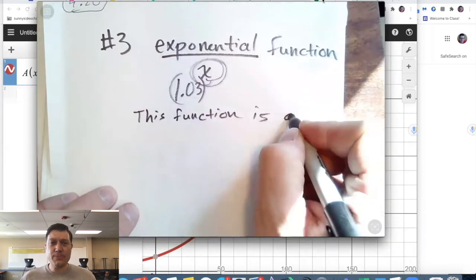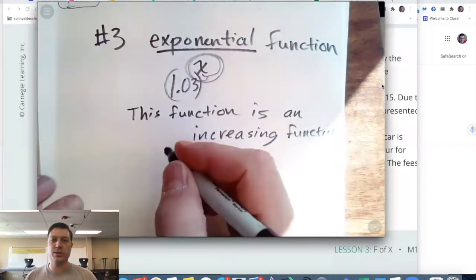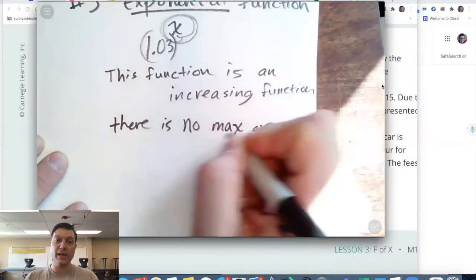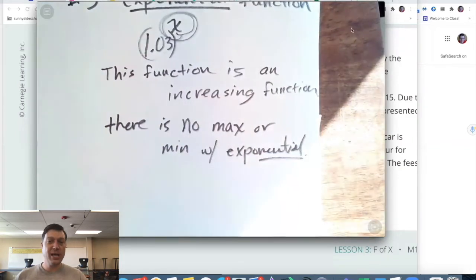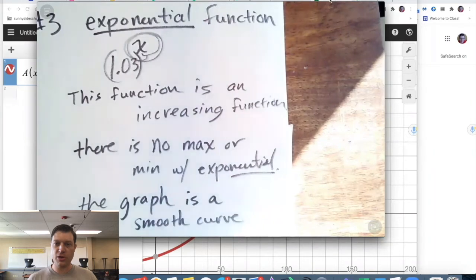This function is called an exponential. So maybe what you're going to do for this assignment is you're going to write your answers down. You have to define the function family, it's exponential. You have to say if it's an increasing or decreasing or a combination of increasing and decreasing functions. Does that mean there's a maximum or a minimum? In this case, no.